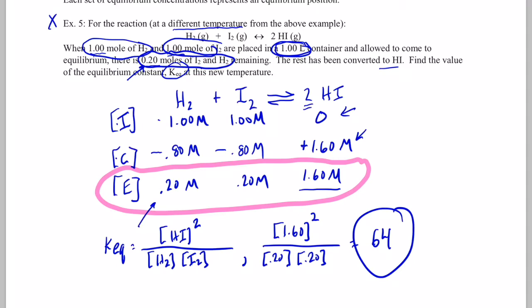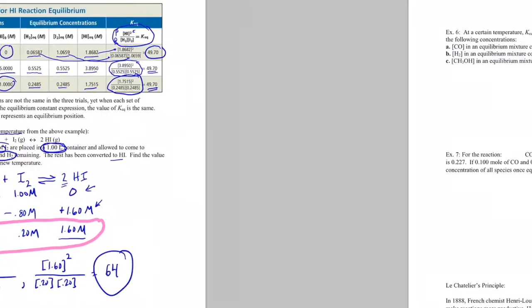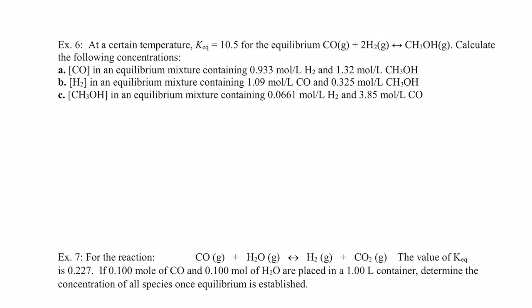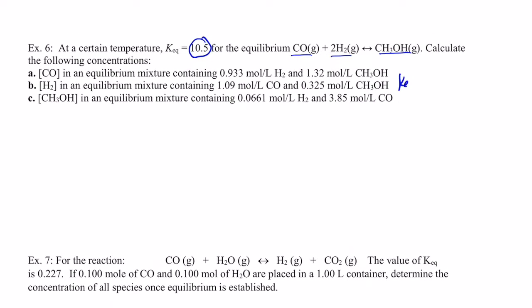Did you see how I did that? We'll have one or two of those on your next assignment. Let's look at another problem with a different reaction: CO + 2H2 → CH3OH (methanol). This time I'm going to give you the equilibrium constant and ask you to find a missing equilibrium concentration. Let's start by writing the equilibrium expression: Keq = [CH3OH] divided by [CO][H2]². Products go on top, reactants on the bottom, and the coefficients in the balanced equation become exponents. Keq equals 10.5.